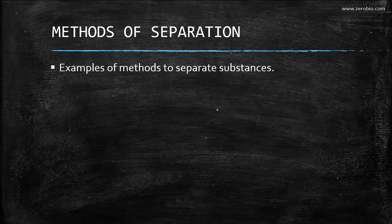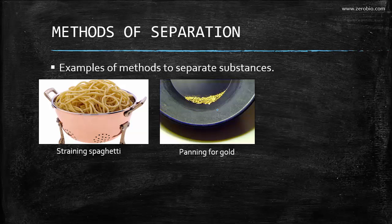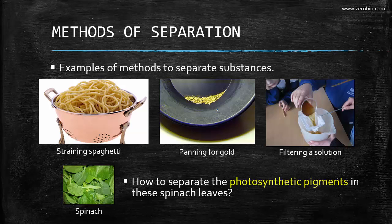Let's talk about methods of separation — some things I'm sure you've seen before. If you've ever cooked spaghetti, you know that you've got to strain the water out, so this is a physical method of separation. Here's another physical method: panning for gold. And here's some kids filtering a solution — everybody's done that in elementary school. All these things can be used to separate substances. But how are we going to go about separating the photosynthetic pigments in spinach? That's the leaf we're going to be using for this chromatography experiment.